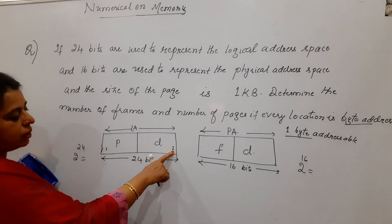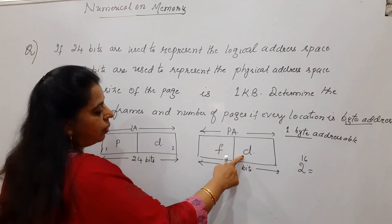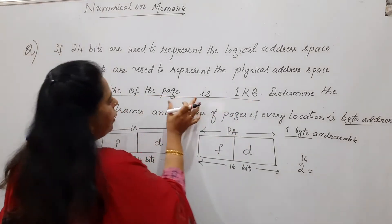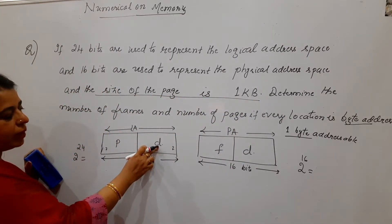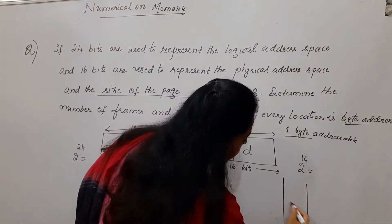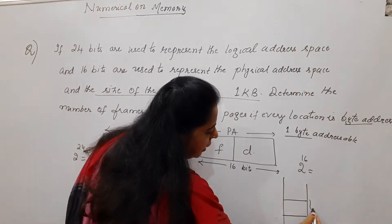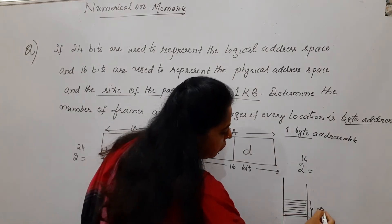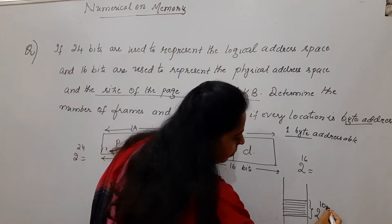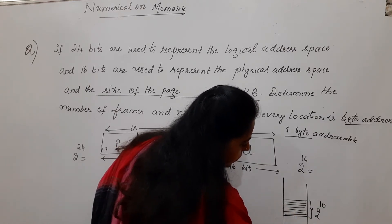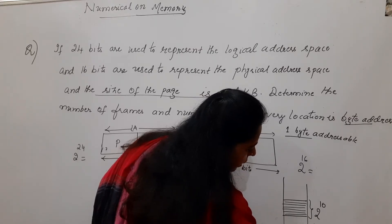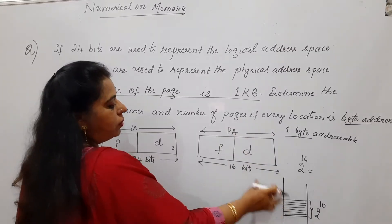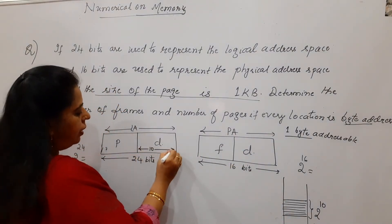Once you calculate how many bits are used to represent the displacement or offset, you can easily determine the frame number and page number bits. The page size is 1 KB and each location is byte addressable. 1 KB is 2 to the power of 10, meaning 10 bits are used to represent the offset or displacement value. From the page size alone, you get that the displacement uses 10 bits.